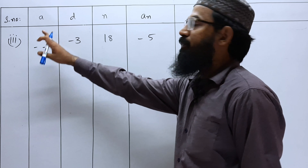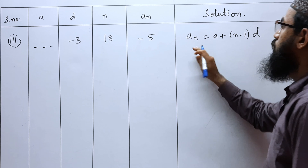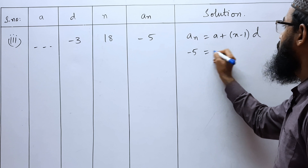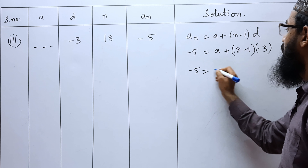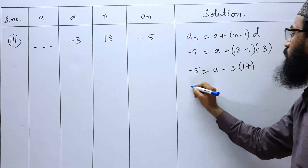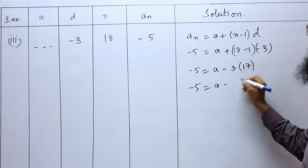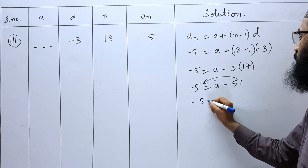Third bit: the first term A is unknown, common difference is minus 3, N is 18, and AN is minus 5. Using the nth term formula: minus 5 equals A plus (18 minus 1) into minus 3. So, minus 5 equals A plus 17 into minus 3, which gives minus 5 equals A minus 51. Moving 51 to the other side: minus 5 plus 51 equals A, so A equals 46.